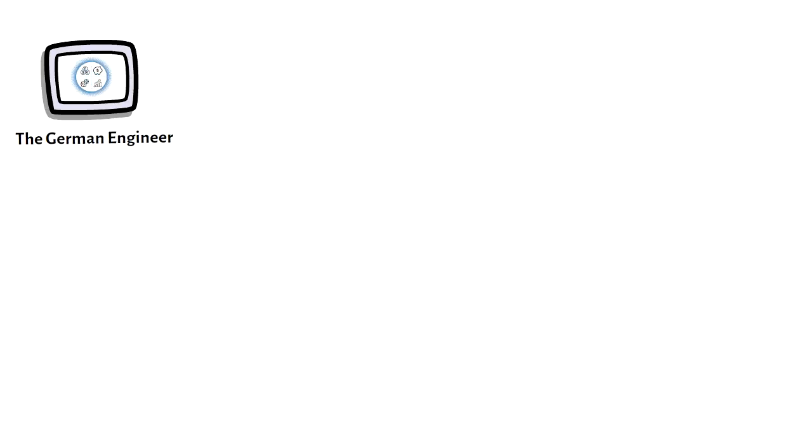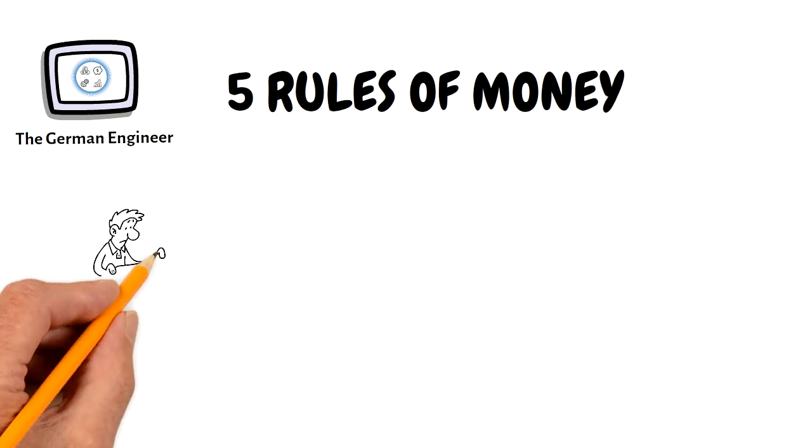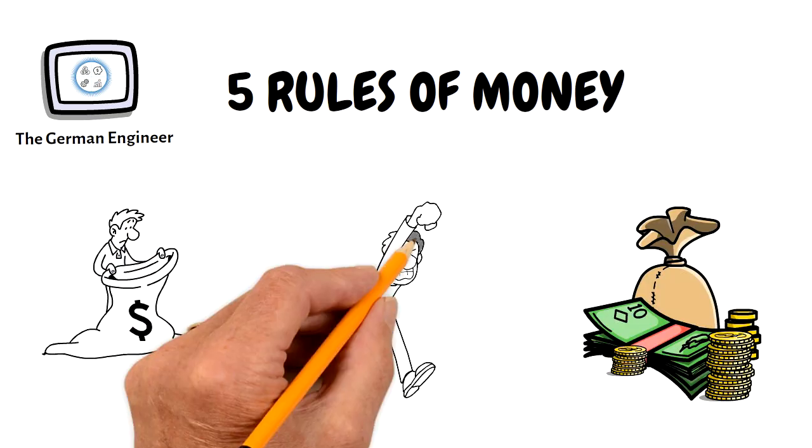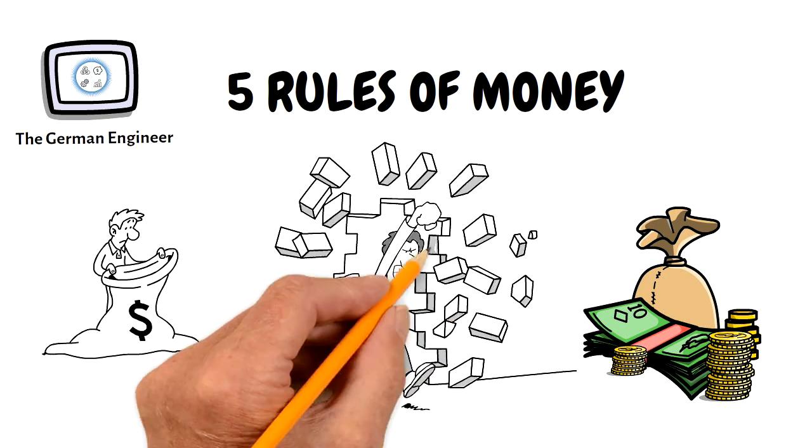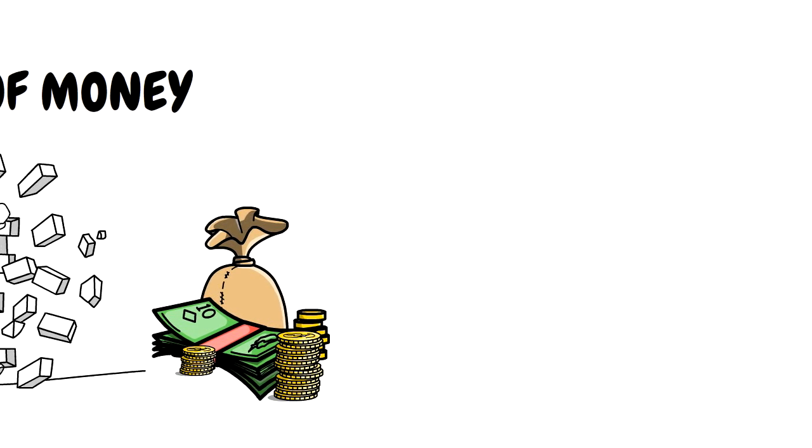In this video I'm going to share with you five rules of money that help you to become a millionaire. Understanding and executing these rules will lead to a better life and financial independence is almost certain. Do you want to improve your financial situation? Then pay close attention to the next few minutes.